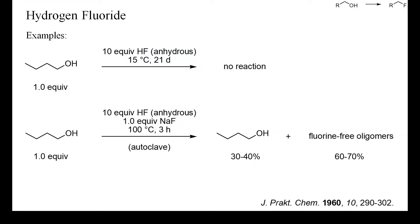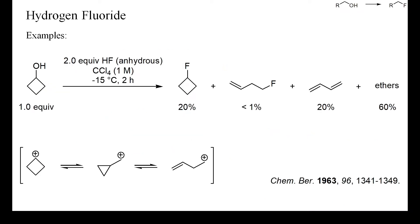Here are two early attempts to convert butanol into butyl fluoride with HF. At room temperature, no reaction occurred and the starting alcohol was recovered unchanged. At 100 degrees Celsius and under pressure, still no butyl fluoride was formed, but mainly fluorine-free oligomers of butanol — probably ethers and oligomerized butene. With the more reactive cyclobutanol, a 20% yield of cyclobutyl fluoride could be achieved by treatment with an excess of hydrogen fluoride, but mostly ethers and butadiene were obtained.